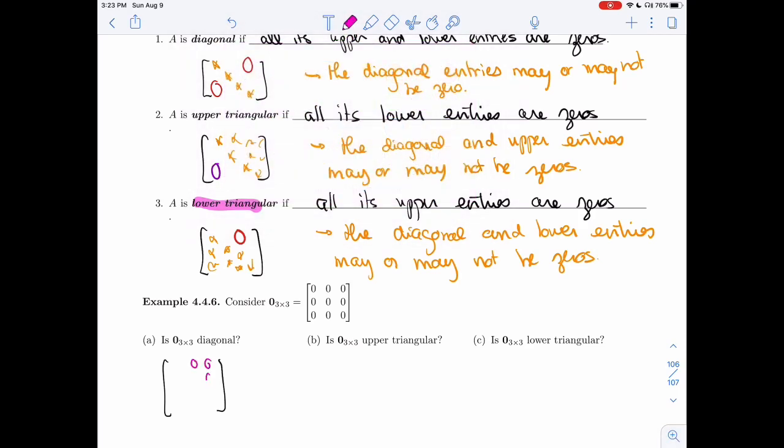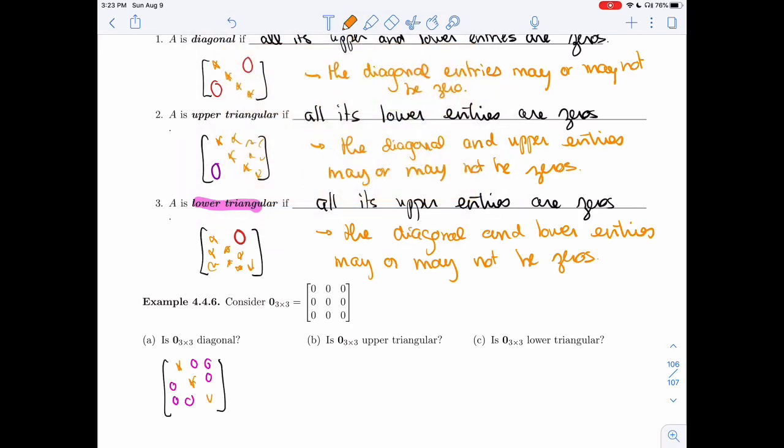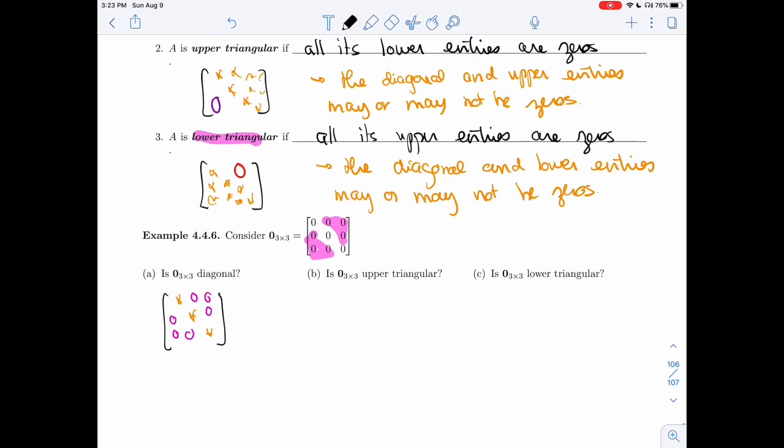So I would need 0, 0, 0, 0, 0, 0. And then the diagonal is anything I want. So does that fit the shape? Well, I have the three 0s and I have the three 0s here, so yeah, it is a diagonal matrix.